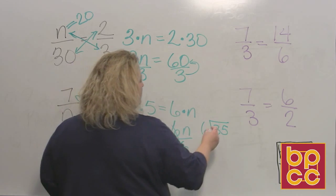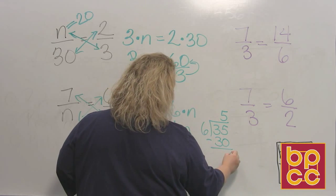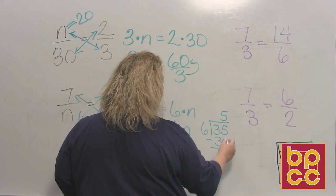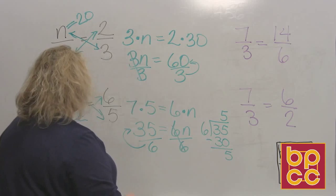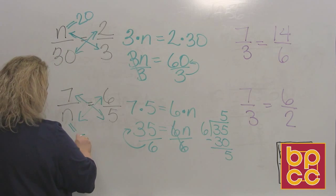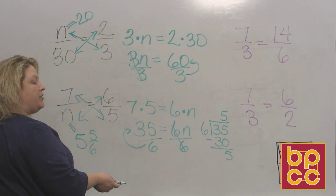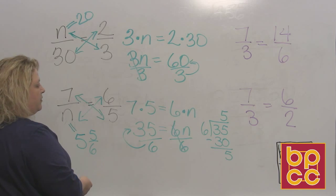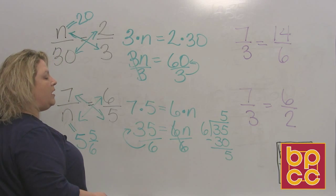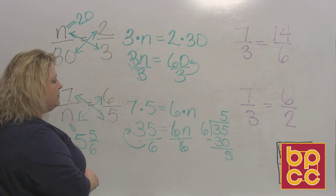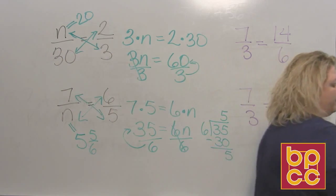6 goes into 35 five times, which makes 30, so that leaves 5 remaining. So the answer is 5 and 5/6. You can leave it as 5 and 5/6. If you try to change it into a decimal, it's going to come out as a repeating decimal. Either one should be sufficient, depending on what they ask you to do.